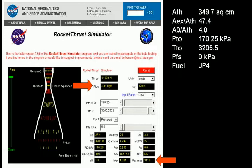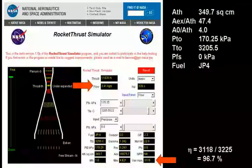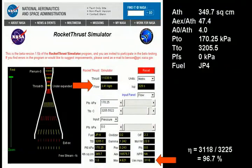The exit velocity is 3,118 m per second, slightly lower than the effective velocity of 3,225 m per second, giving this engine an efficiency of 96.7%. And just where did I find the effective velocity on this page? You have to calculate it. No problem.